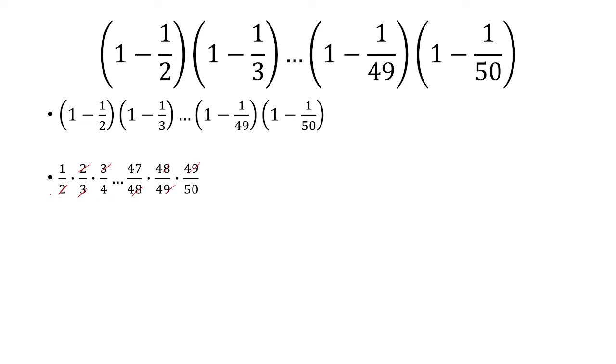The 4 and the 47 will also be canceled. So the 4 will be canceled by the next term, which is 4 over 5. And then the 47 will be canceled by the term before it, which is 46 over 47. And so what we're left with is 1 over 50.